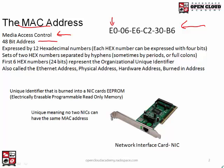If I were to convert each of these hex numbers into binary, each one would be expressed with 4 bits. So E is 1110, then 0 would be four zeros, and the number 6 would be 0110, and so on. Each one of these hex numbers can be represented by 4 binary bits — we used to call that a nibble in the old days, though you don't hear that much anymore.